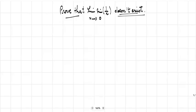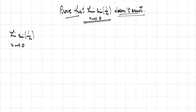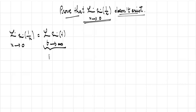Hello and welcome. In this video we are going to prove the non-existence of the limit of sine of 1 over x when x approaches zero. We all know that the limit of sine of 1 over x when x approaches zero equals the limit of sine t when t approaches infinity.